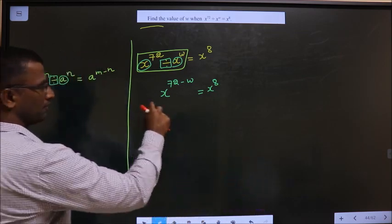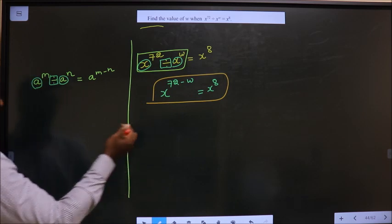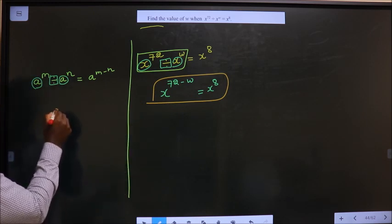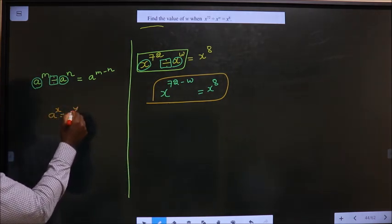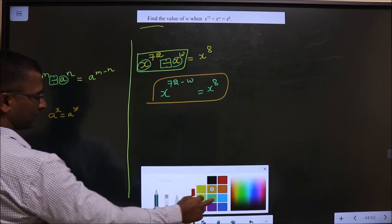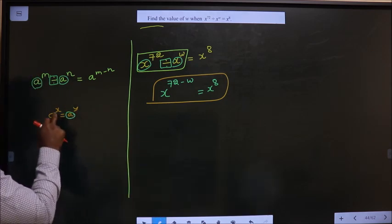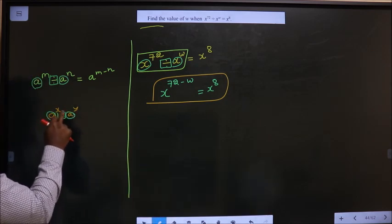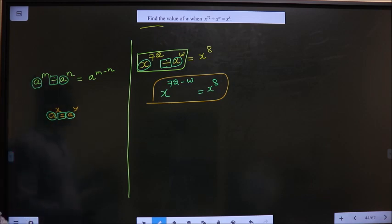Now, what formula will you apply on to this one? a^x equal to a^y. Here also the bases are same and it's equal between them. In that case, equate the powers.